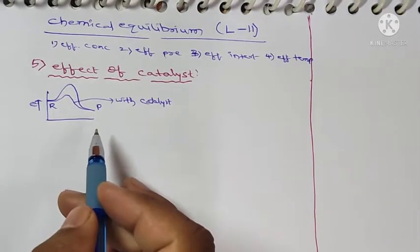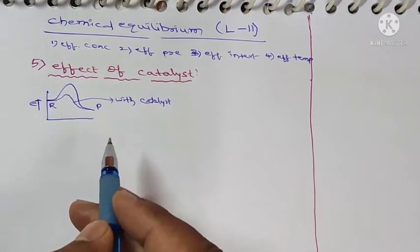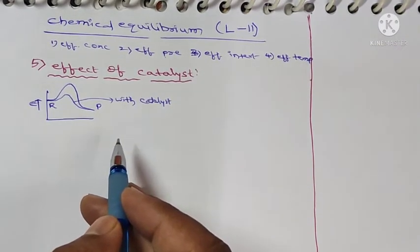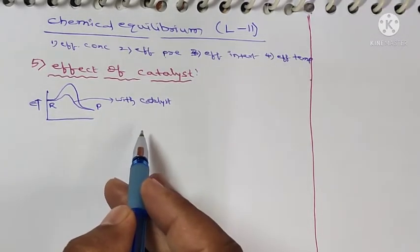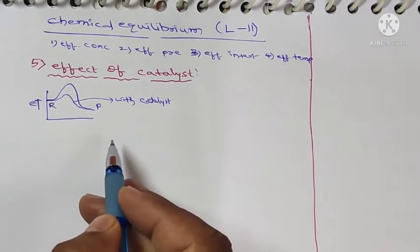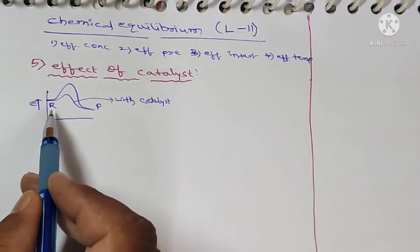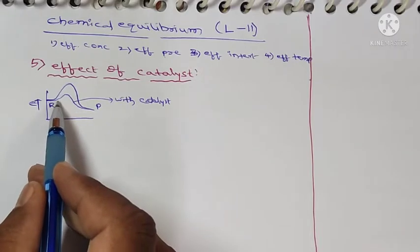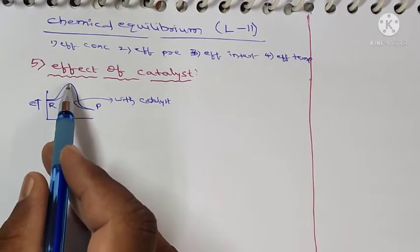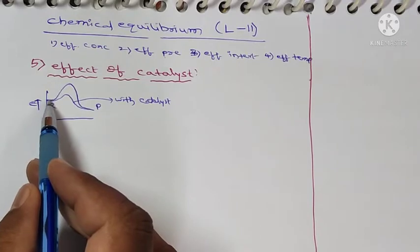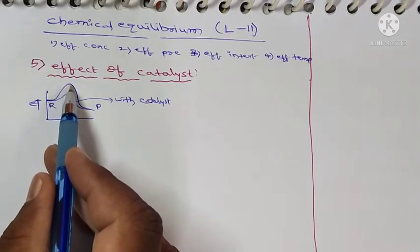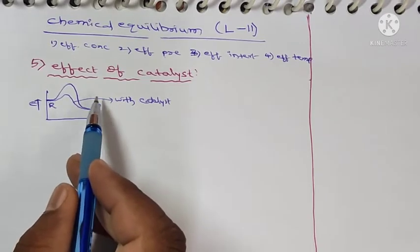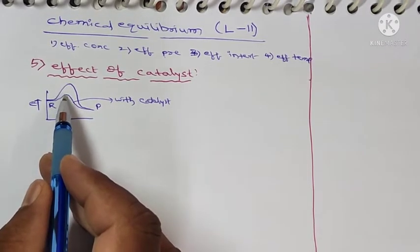First of all, we have to know what a catalyst is. The substance which is not consumed in the reaction and increases the rate of reaction is called a catalyst. These are the reactants, and the reactants convert into products. This is the activation energy. Without a catalyst, the activation energy is more. When we add the catalyst, the catalyst decreases the activation energy.